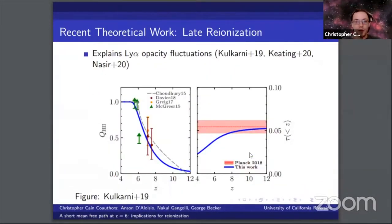Recent work has pointed towards reionization finishing at redshift 6 or possibly even later. These works have invoked late reionization to explain the large opacity fluctuations in the Lyman alpha forest that are observed below redshift 6.